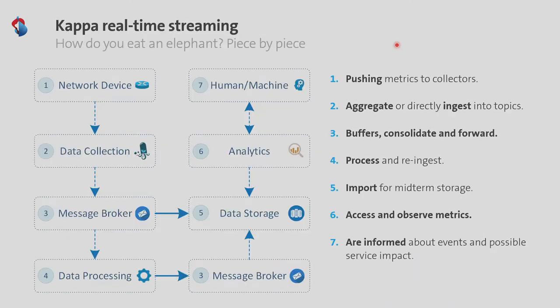Our pipeline starts at the top left with the network device — the router — sending data to a data collection system. The data collection aggregates and ingests data to a message broker for live processing; in our case, Kafka. At this point, the data can go to a data processing pipeline. For example, in device topology we have counters — the number of packets through an interface is always increasing, so you normalize that number to see the difference. Then data goes back to the message broker, to a data store, and to an analytics platform where metrics can be observed.